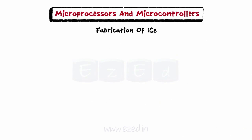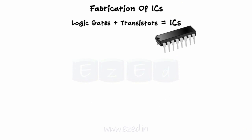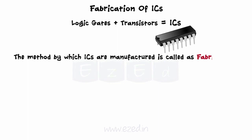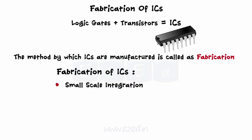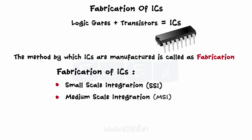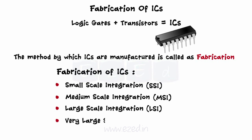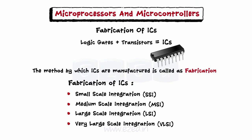Let's see the concept of IC fabrication. ICs are nothing but a bunch of logic gates and transistors connected together. The method by which ICs are manufactured is called fabrication. Based on the number of transistors and gates used, ICs are categorized into four basic types: small-scale integration (SSI), medium-scale integration (MSI), large-scale integration (LSI), and very large-scale integration (VLSI).